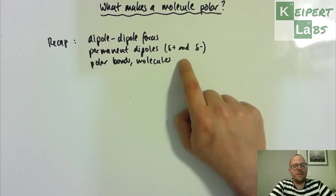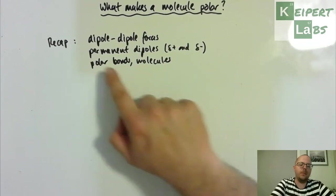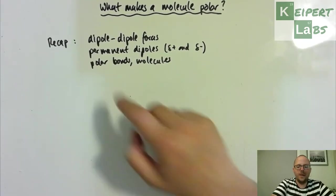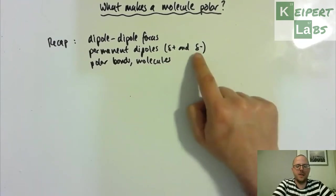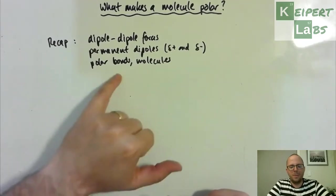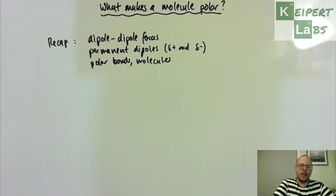That leads us to discussion of what we call polar bonds and polar molecules. A polar covalent bond is one that exists with a positive and negative end, and then a polar molecule has this idea of a positive end and a negative end. This is what we're going to be addressing in looking at this question.